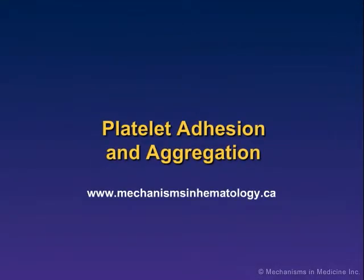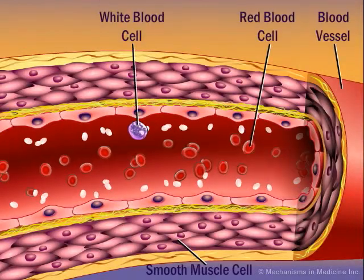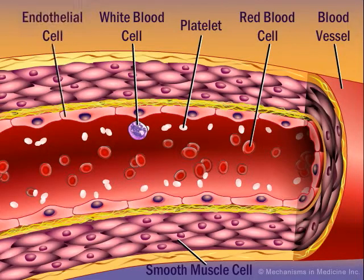Platelet adhesion and aggregation. In flowing blood, red cells predominate in the axial stream, while the biconvex disc-shaped platelets are marginated along the vessel wall, where they are well positioned to monitor the integrity of the endothelium.